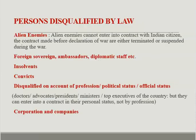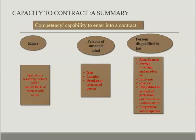Next are persons disqualified by law. These include alien enemies, foreign sovereign ambassadors and diplomatic staff, insolvents, convicts, and those disqualified on account of their profession. Corporations and companies also fall under this category. This covers the summary of the topic of capacity to contract.